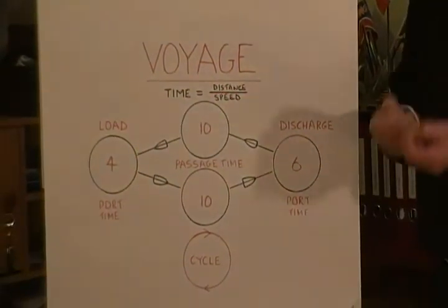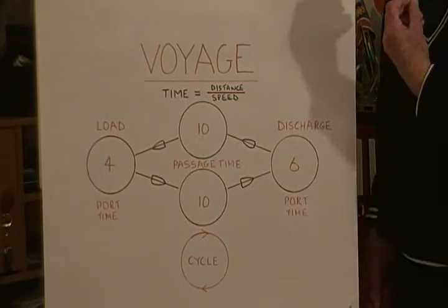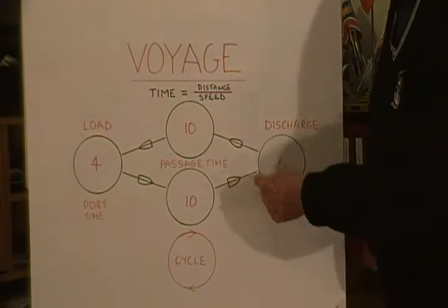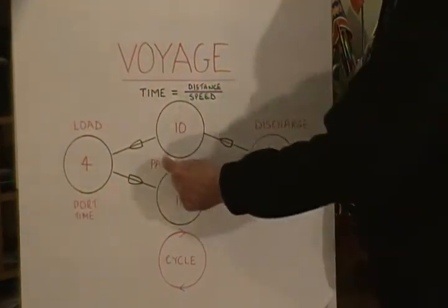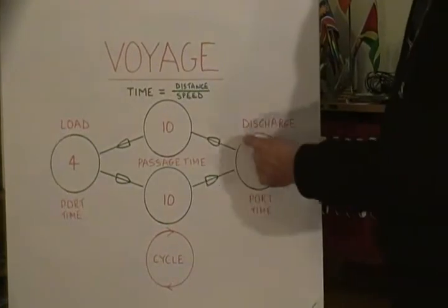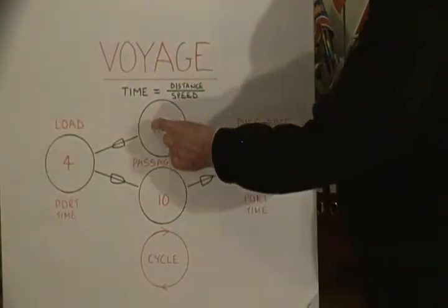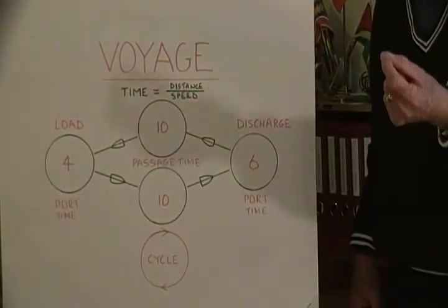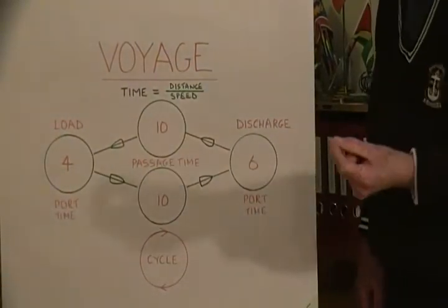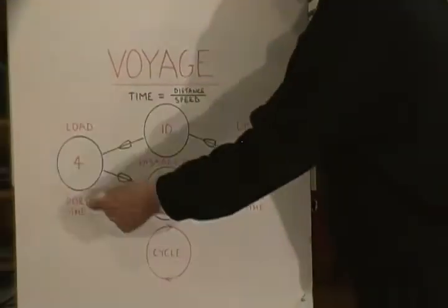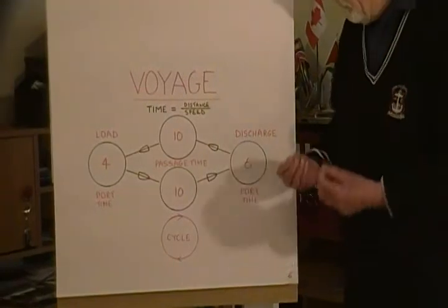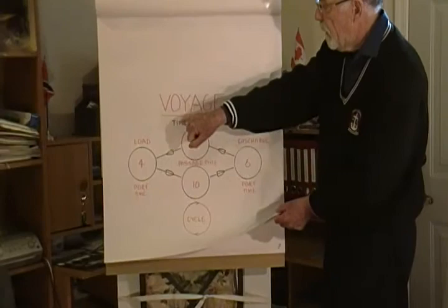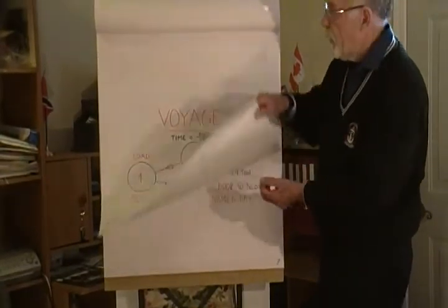The ships that transport the cargo go on a voyage, and a voyage consists of port time and passage time. A ship can load in six days, do passage in ten days, discharge in four days, and come back again — that is what we call a cycle. For those doing port and terminal operations, it's very important that you get used to examining things in cycle and measuring the time it takes. Time is distance over speed.